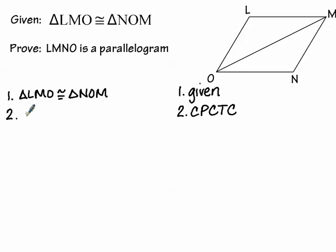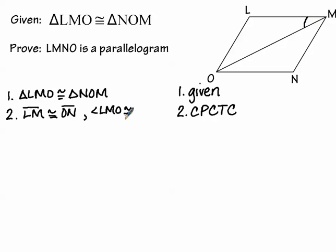Instead, I'm going to state that segment LM is congruent to segment ON — the first two letters in each triangle name. At the same time, I want to state that angle LMO, up in the upper right, is congruent to angle NOM. So I've stated that the top side is congruent to the bottom, and I've stated these two congruent angles — both coming from the congruent triangles given in statement one.